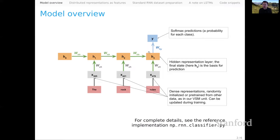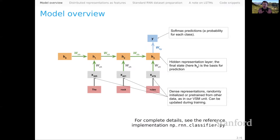A couple things to note. First, if you'd like further detail on how these models are structured and optimized, I'd encourage you to look at the pure NumPy reference implementation of an RNN classifier included in our course code distribution. That's a great way to get a feel for the recursive process of computing through full sequences and having the error signals back-propagate to update the weight matrices. But for now, understanding the core structure of this model is sufficient.